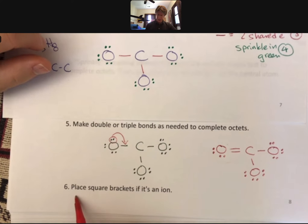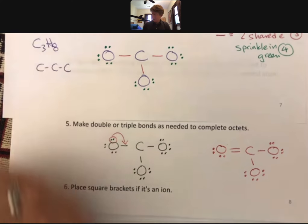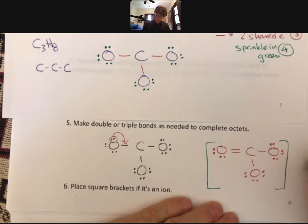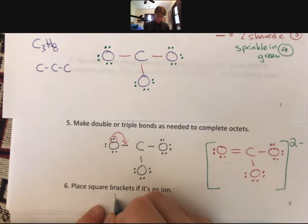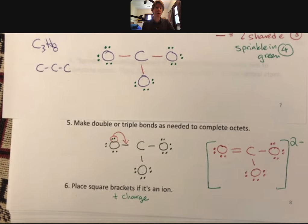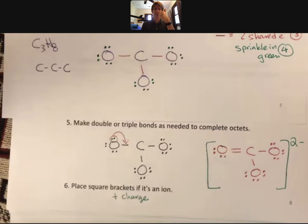Last but not least, since this is an ion, place square brackets if it's an ion. And so let's do that in green. And our two minus charge. Place square brackets and charge if it's an ion. And that minus two, just like when we were doing the ions before, tells us that there are two extra electrons somewhere in this Lewis structure that don't belong to the regular atoms. Final answer, thumbs up.